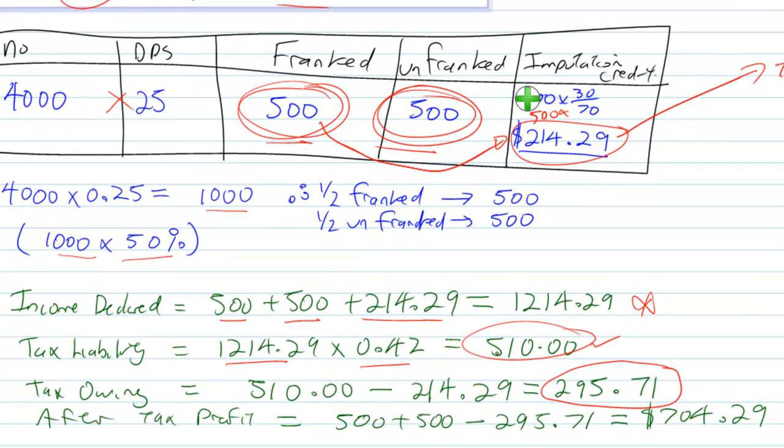So notice that we should be paying $510, but we've already paid $214.29. So your tax owing is going to be $510, take the $214, which is $295.71. So you still owe nearly $300. So to work out your after-tax profit is that one what you've been paid, that one what you've been paid, take away the extra tax that you've got, and so $704.29 is your after-tax profit on that.